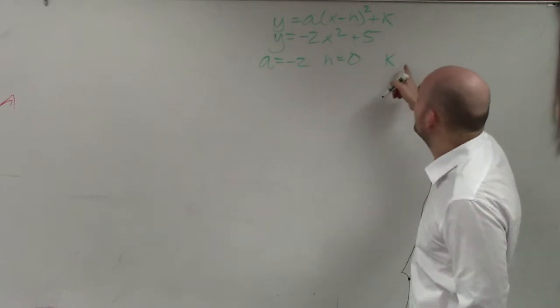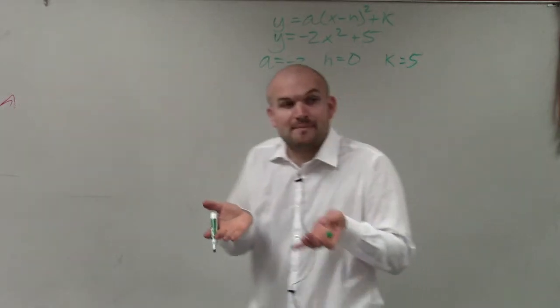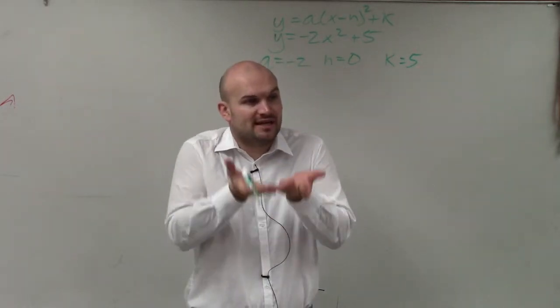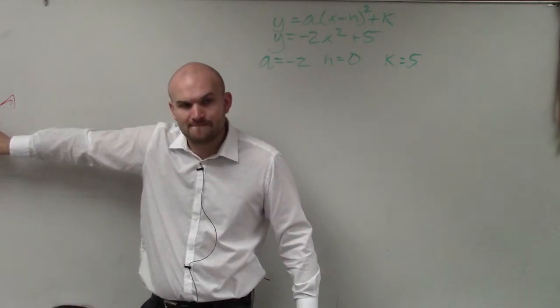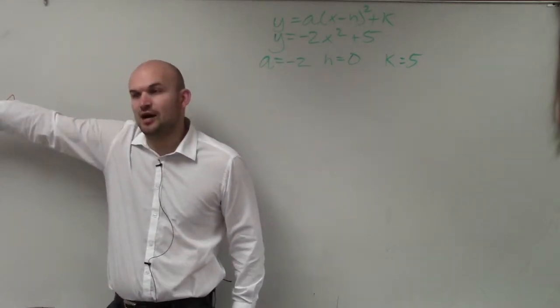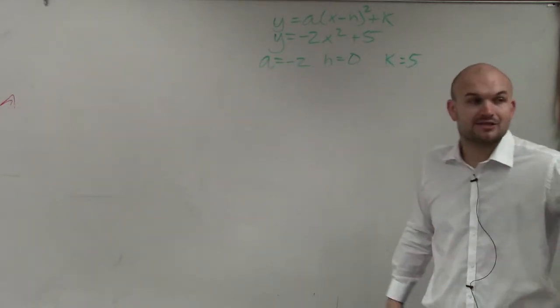And k is going to be plus 5. So that means that's my vertical translation. That means my graph is now being shifted up 5. And remember, when I'm talking about a graph, I'm talking about this parent graph. This graph is being shifted up 5 units. However, there are some important points. Now let's look at a.